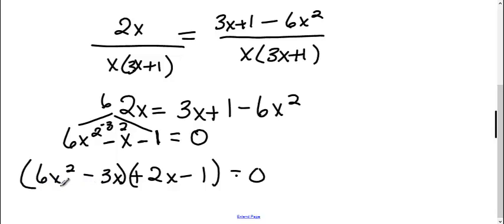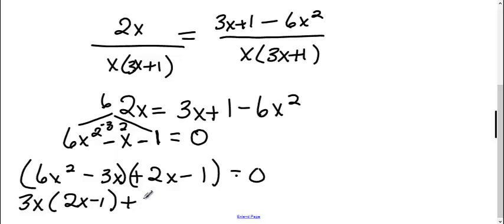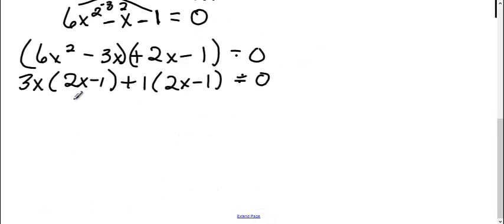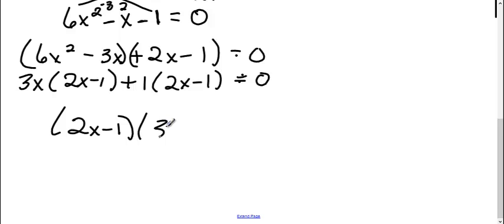Any time I have four terms, I need to group the first two and the last two. From the first group I can pull out a 3x, and I'm left with 2x minus 1. The second group already has a 2x minus 1, so I just pull out a 1. Now they both have a 2x minus 1, so I pull that out, and I'm left with 3x plus 1.